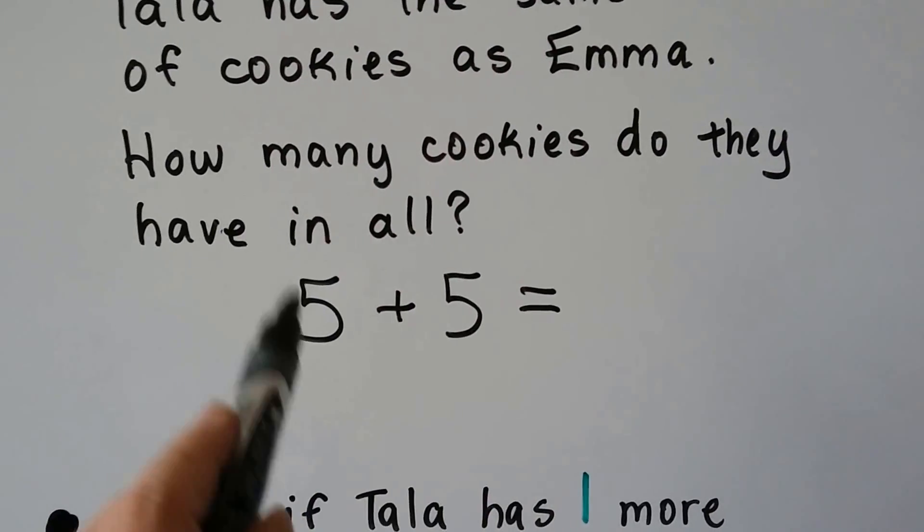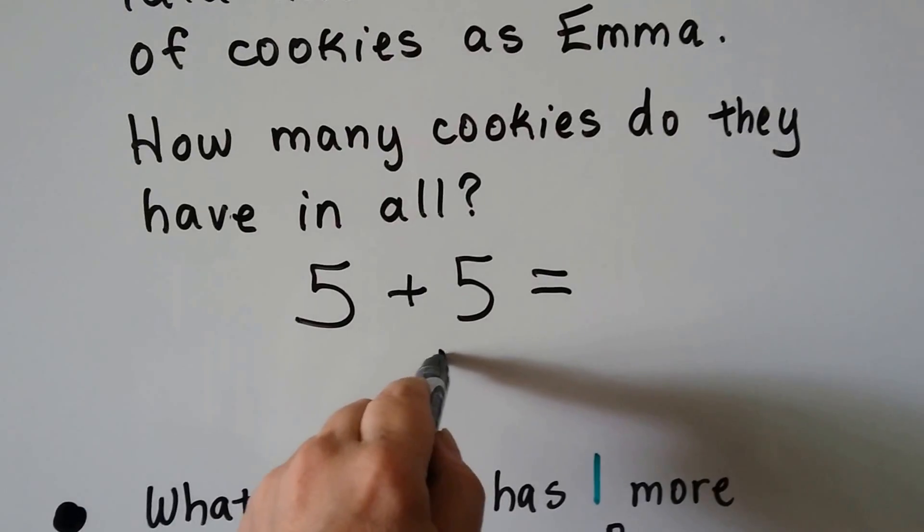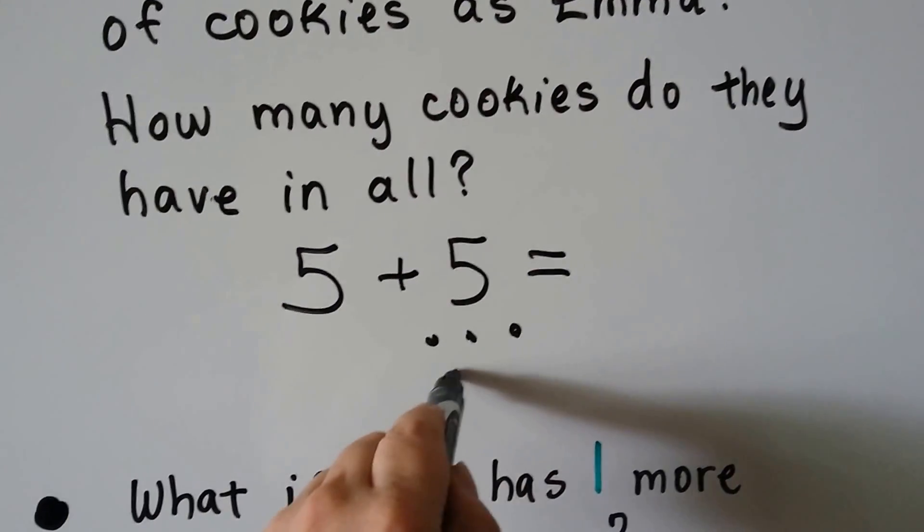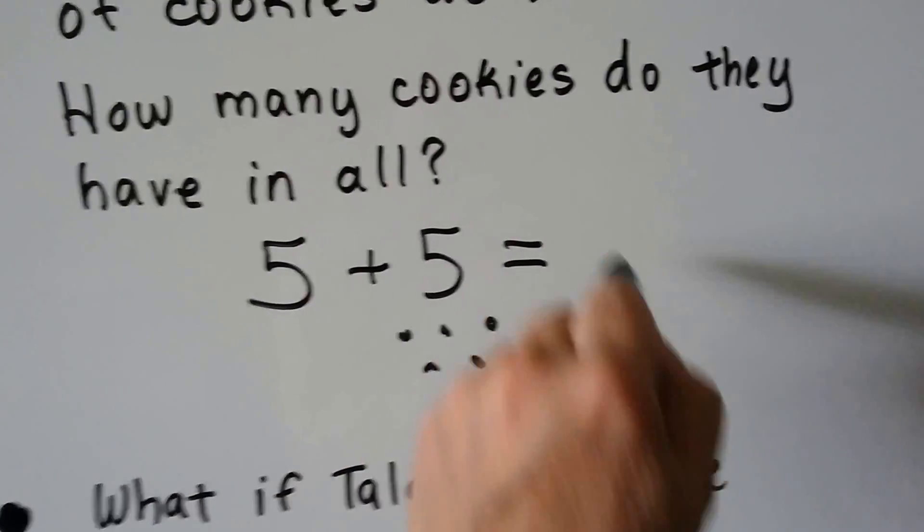Five plus five is five, six, seven, eight, nine, ten. It's ten.